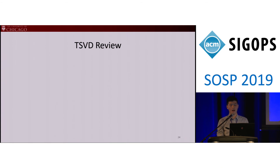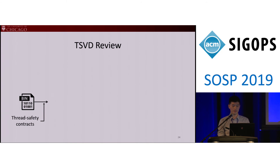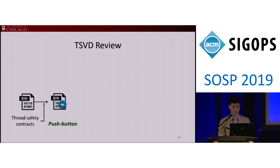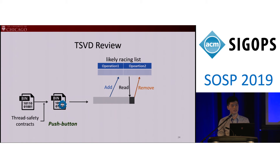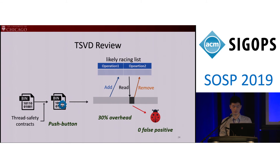To summarize how TSVD works: TSVD takes the binary and input and instruments them based on the thread safety contract. The instrumentation is a push-button design because our dynamic analysis mostly relies on physical timestamps. At runtime, TSVD maintains a likely racing call list. After the program starts, TSVD adds to the list based on physical timestamps, reads the list to inject delays, removes from the list based on delay feedback, and reports bugs — all with low overhead and zero false positives. If resources allow, TSVD passes remaining entries in the list to the next run.